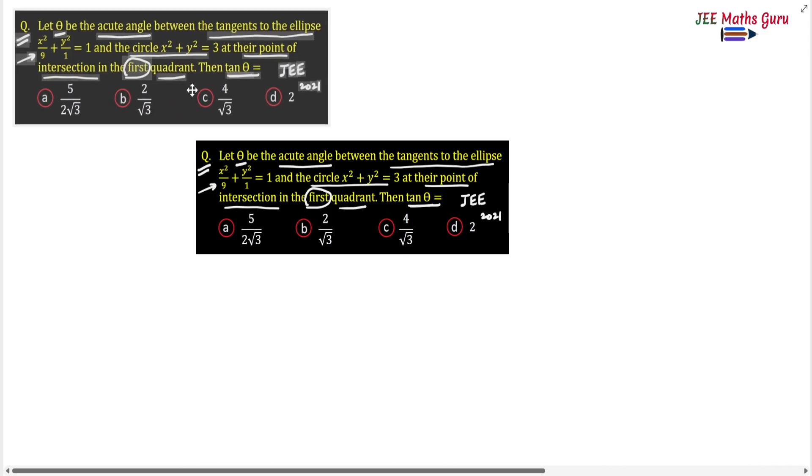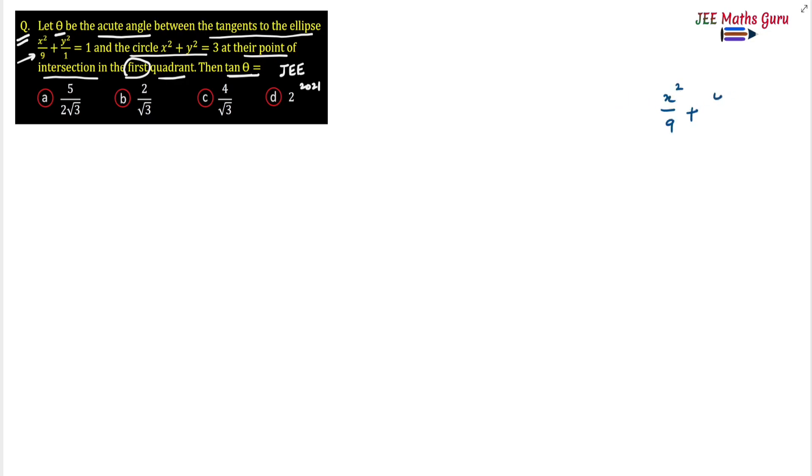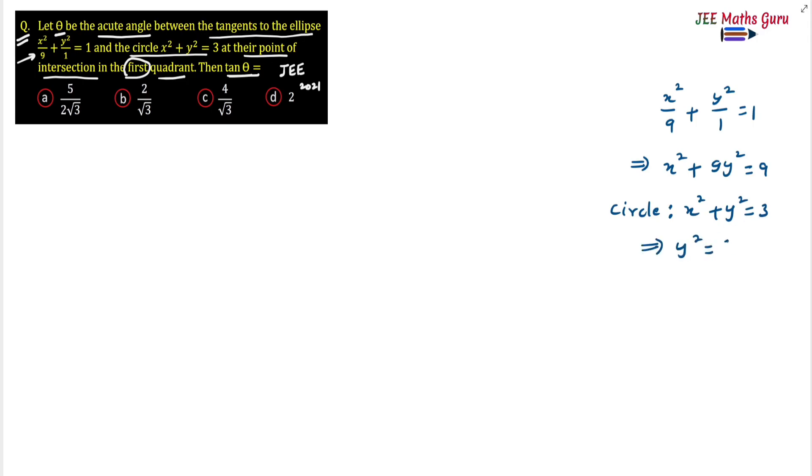Let's see the solution. We are given the equation of the ellipse: x²/9 + y² = 1, which can be written as x² + 9y² = 9. The circle is given in standard form: x² + y² = 3, so y² = 3 - x². We have to find their point of intersection, so we need to solve both equations.